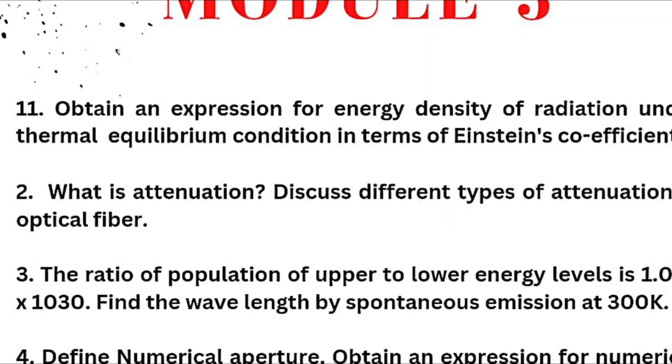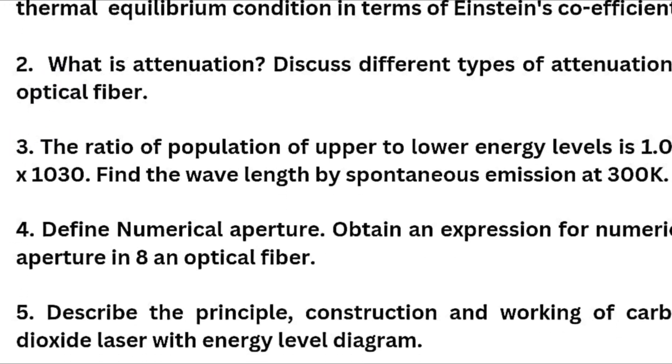Now we have here module third. Obtain an expression for energy density of radiation under thermal equilibrium condition in terms of Einstein coefficients. Again it is super important question. Next we have what is attenuation. Discuss different types of attenuation in optical fiber. And the ratio of population of upper to lower energy level which is 1.059 into 10^-30. Find the wavelength by spontaneous emission at 300 Kelvin.